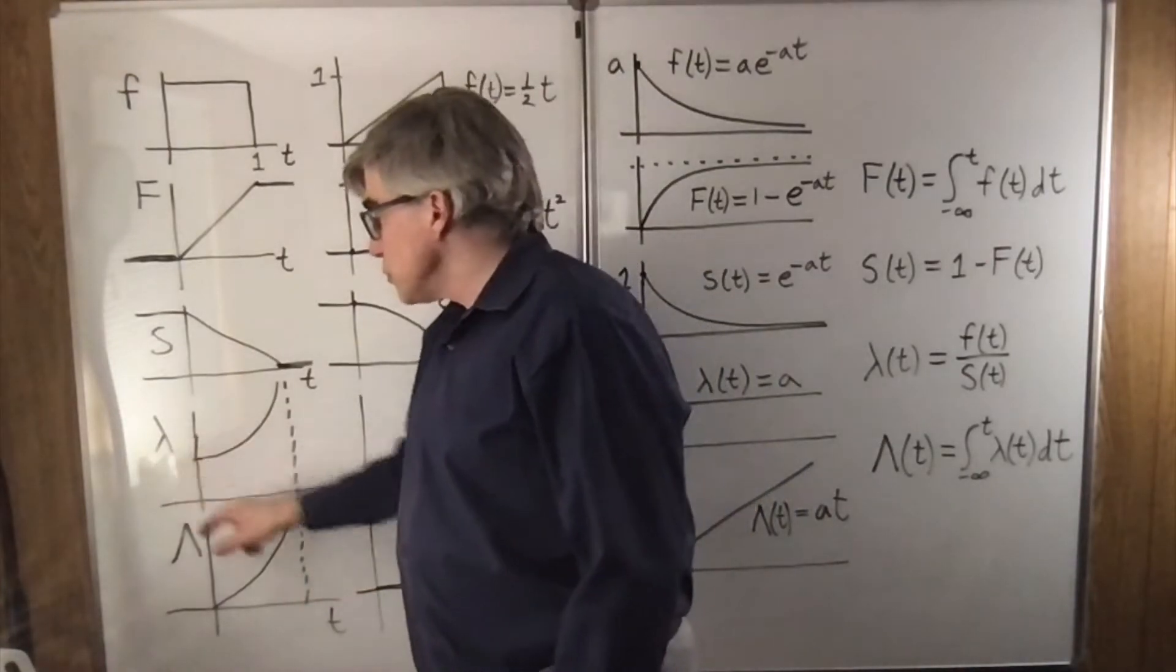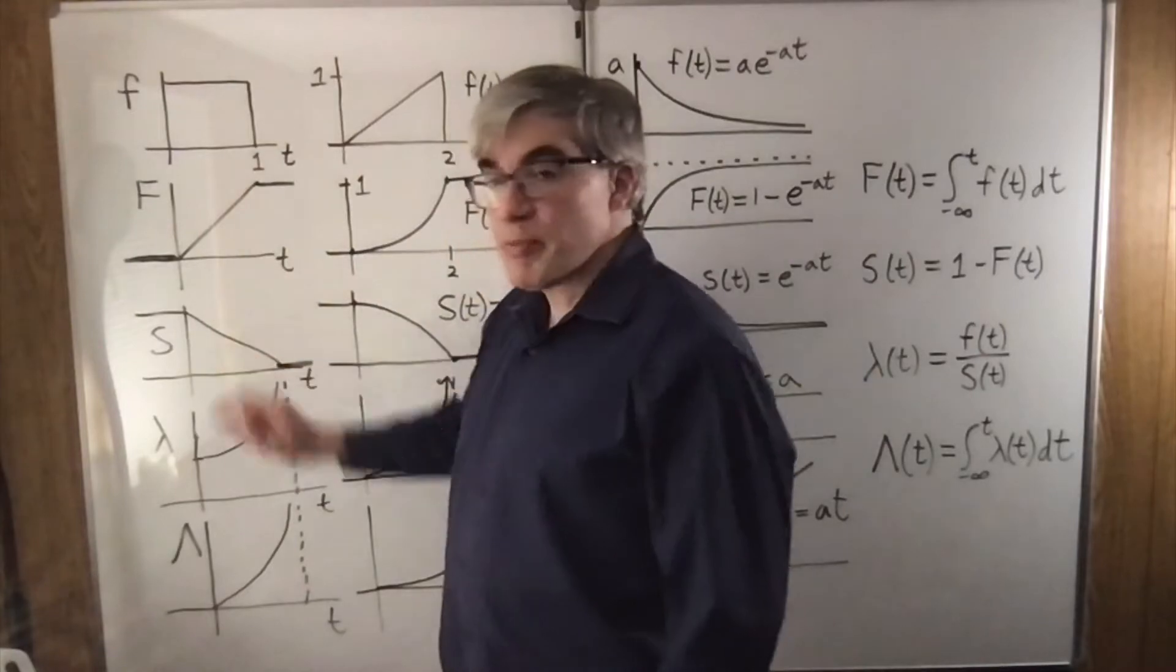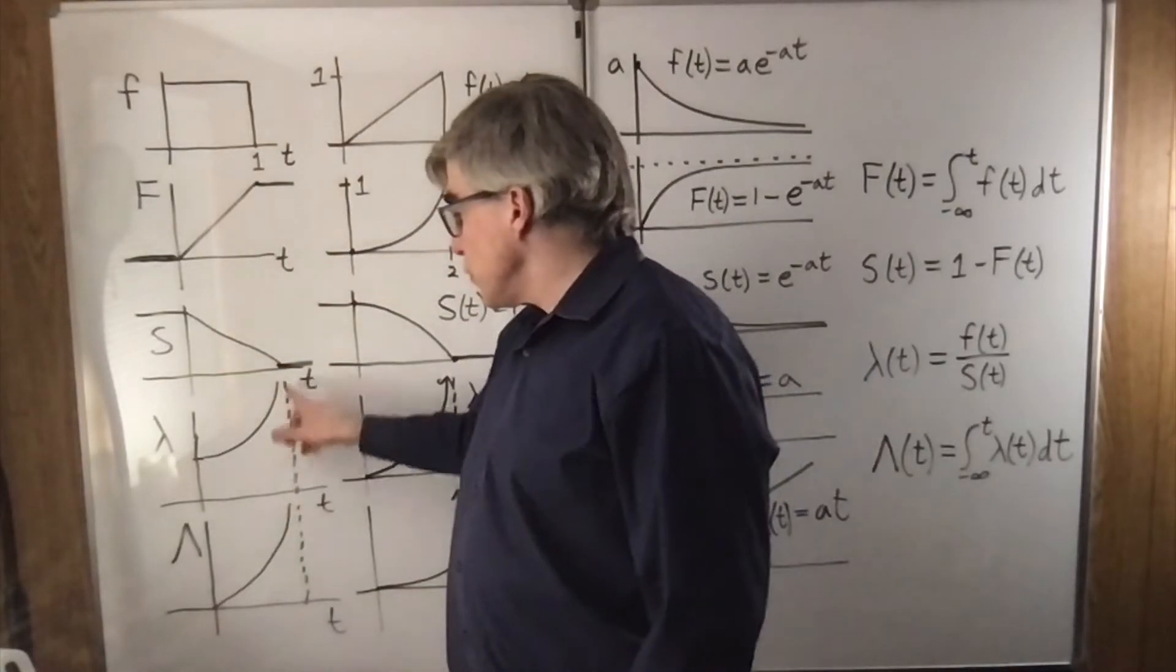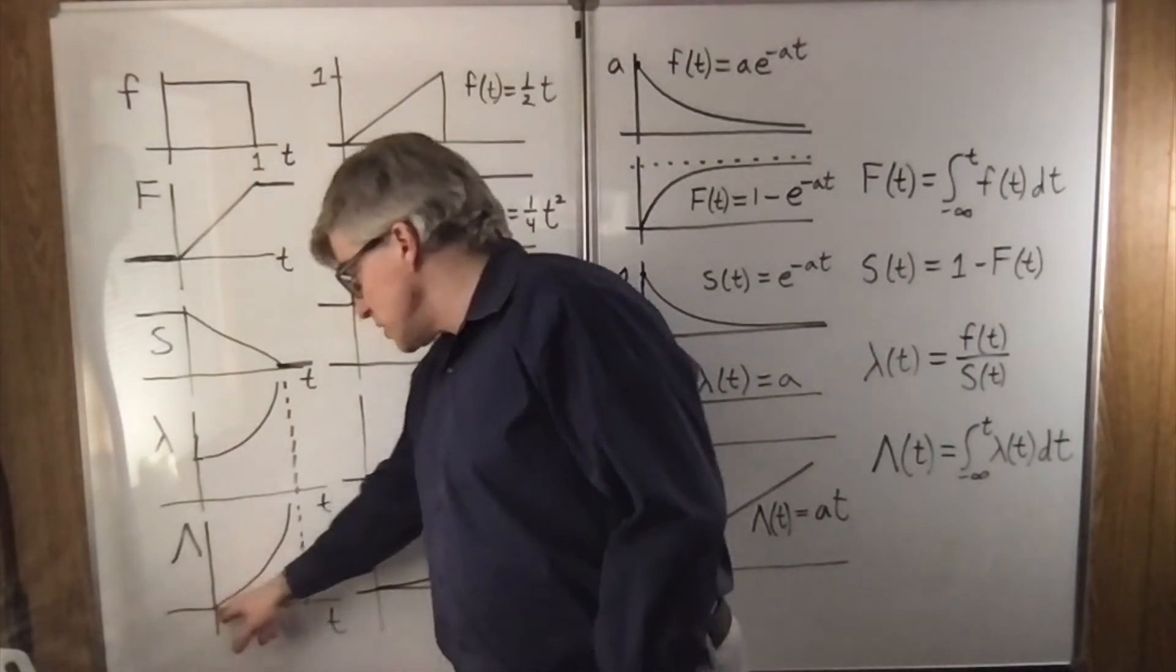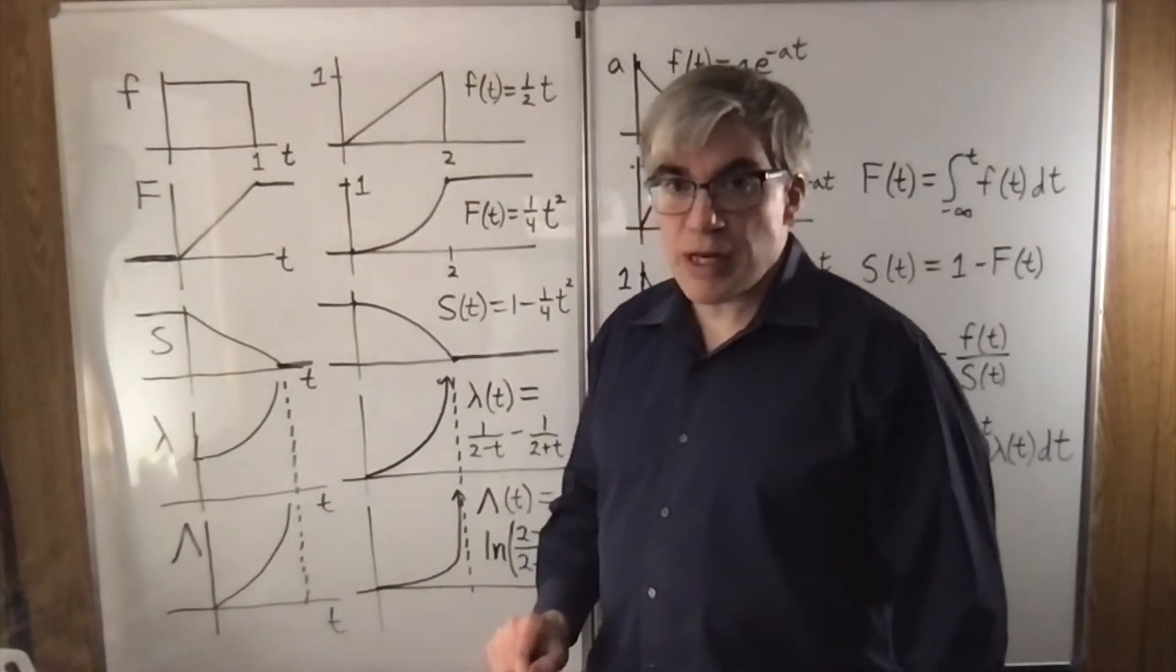The hazard function would just be 1 over 1 minus T, which has a vertical asymptote at 1. And then big lambda is the integral of that, so it starts at 0 and also spikes to infinity at 1.